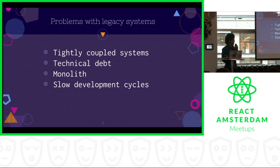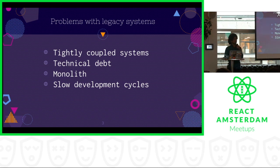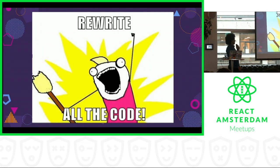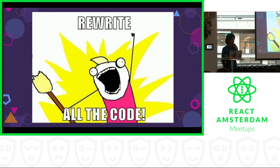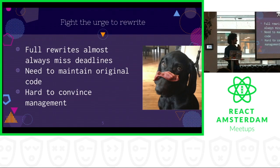Whenever we encounter problems like this, the first kind of feeling we have is to rewrite all the code. This is a very natural reaction for engineers, mostly because writing code is way easier than reading someone else's code. I think all of us have recognized that feeling. But we must fight this urge.